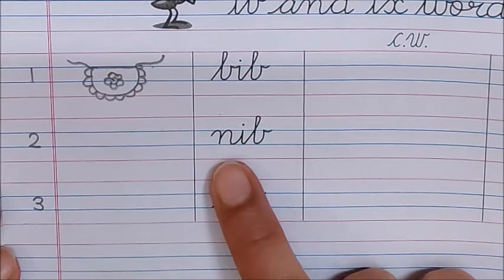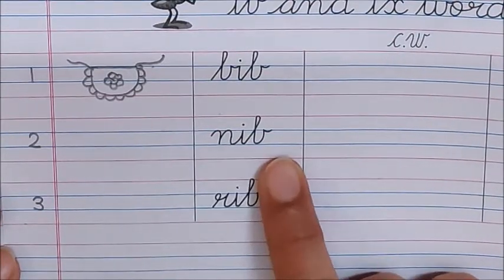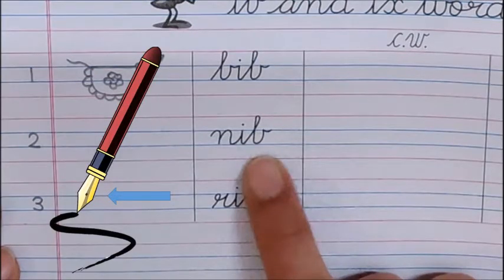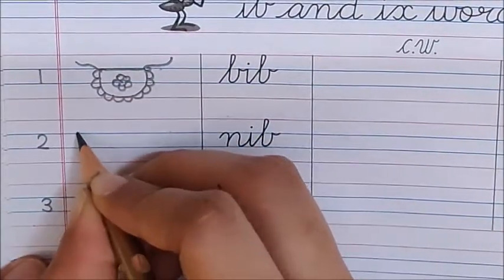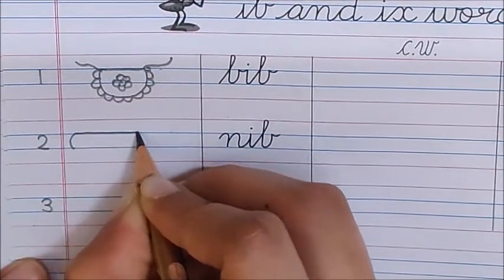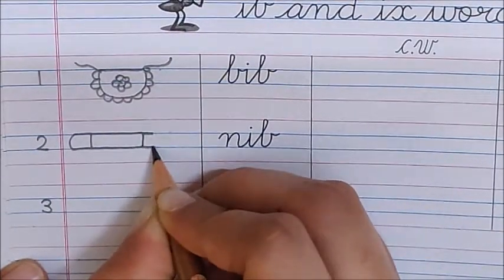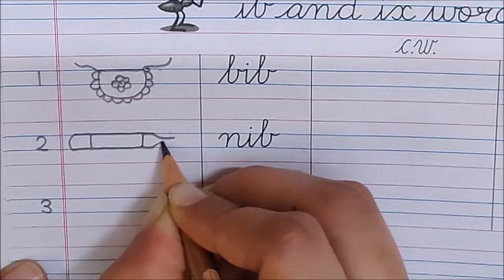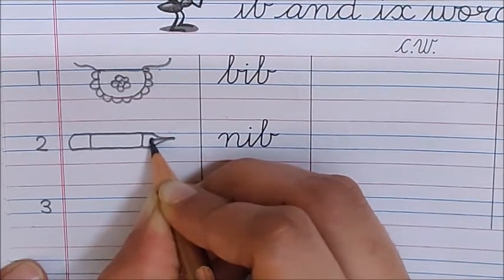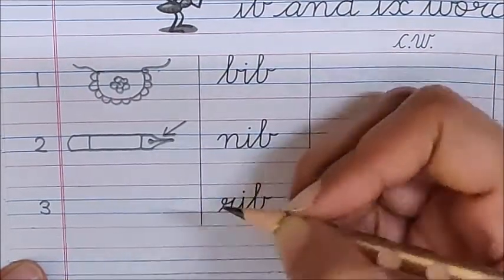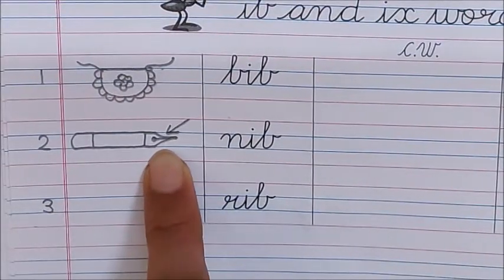This bib has frills and these strings are tied to the bib. Now let's read the next word. N-I-B Nib. N-I-B Nib. Look at this arrow children. This arrow is pointing to the nib. This is a nib of a pen. Now let us draw nib. N-I-B Nib.